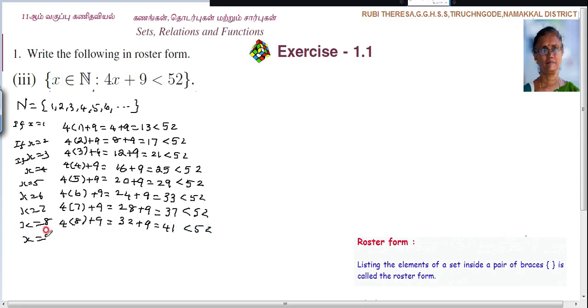Next x equal to 9. 4 into 9 plus 9. 4 9's are 36 plus 9, 45, less than 52. X equal to 10. 4 into 10 plus 9. 40 plus 9, 49, less than 52.